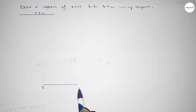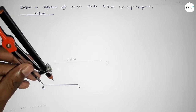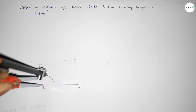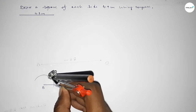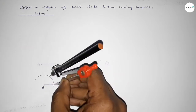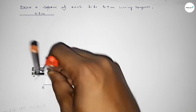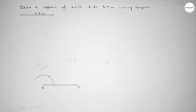Taking here point B and here C. Now we have to draw a 90-degree angle at point B. Putting the compass on point B, taking any length and drawing an arc. With the same length, putting the compass here and cutting here, then putting the compass here and cutting here, and drawing an arc here.